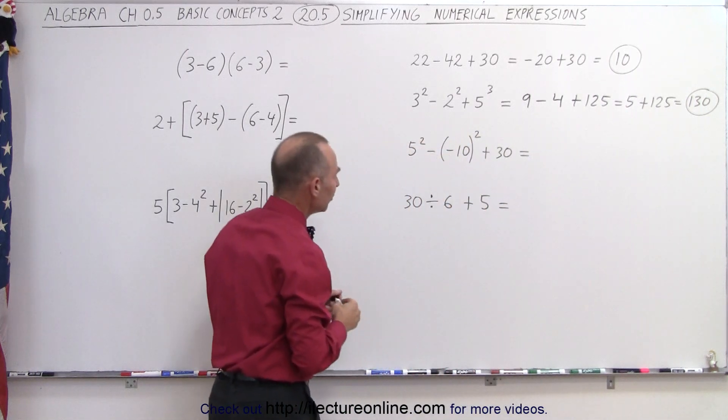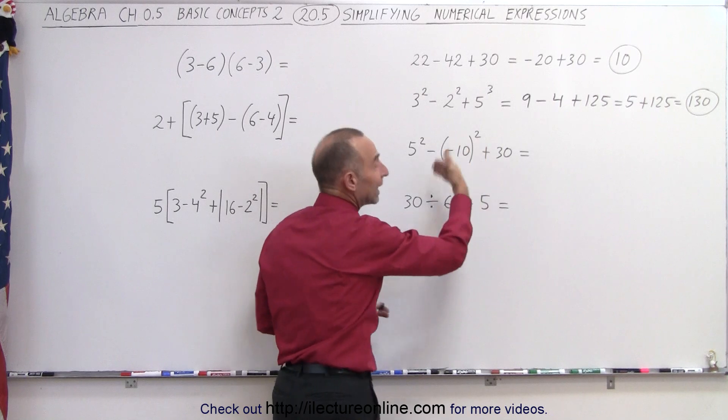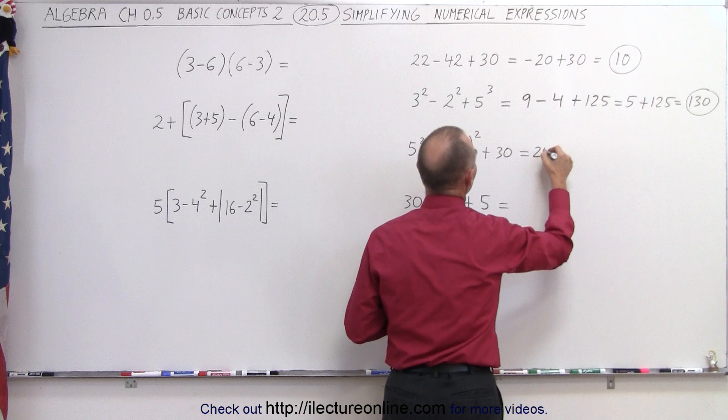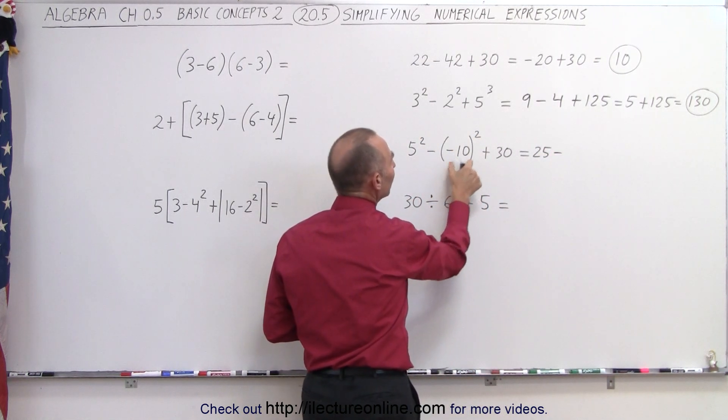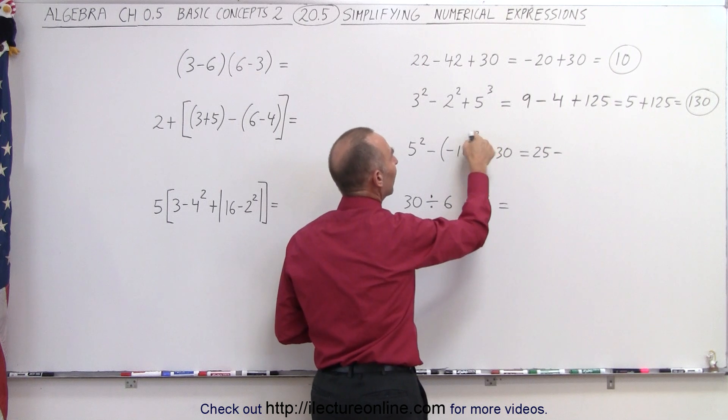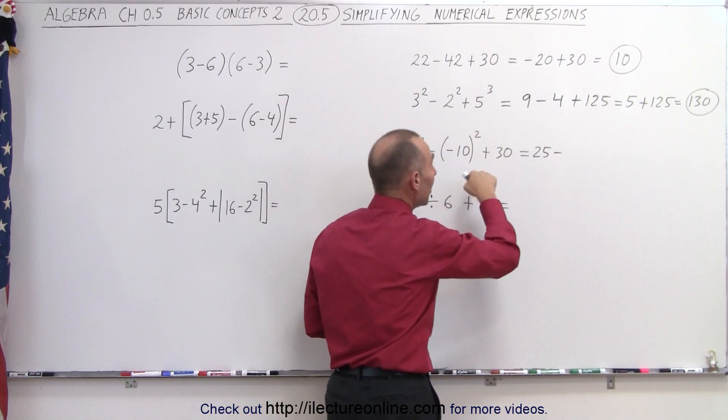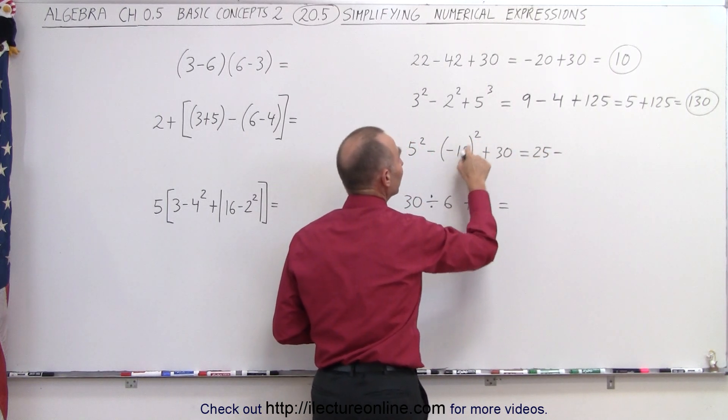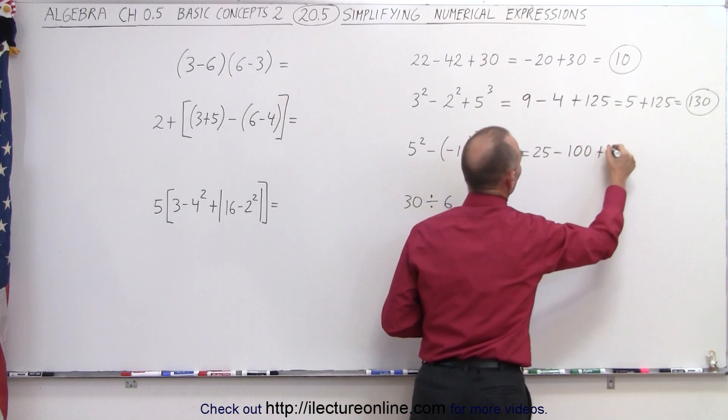On the next example, notice we have exponents, subtraction, and addition. Exponents have priority. So we have 5², that gives us 25, minus, and notice in this case we have minus 10 in parentheses squared, so the square applies to the minus as well as to the 10. A negative number squared becomes positive, but of course this does not apply to the negative, so that remains. So negative 10 squared is a positive 100, and then we add that to 30.